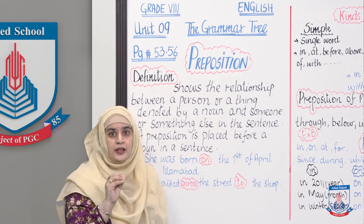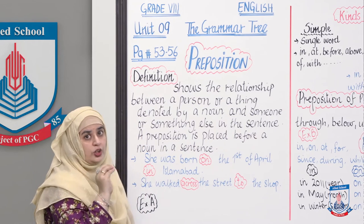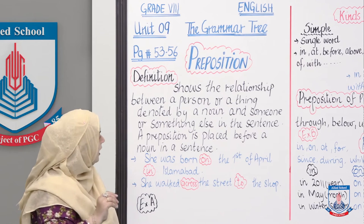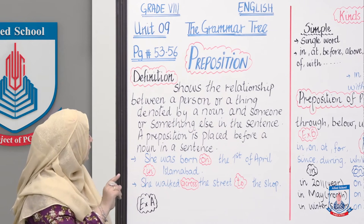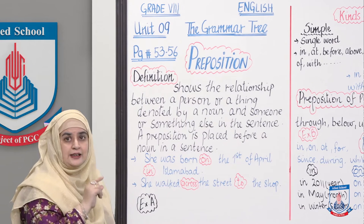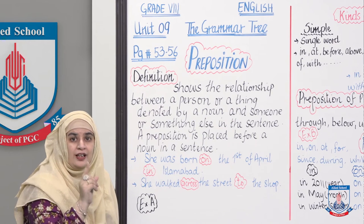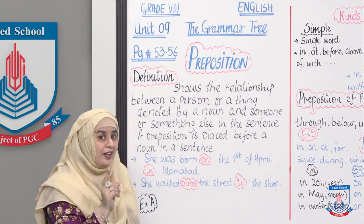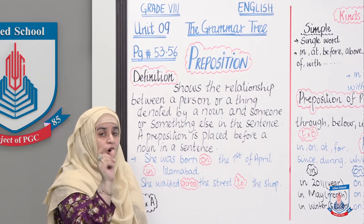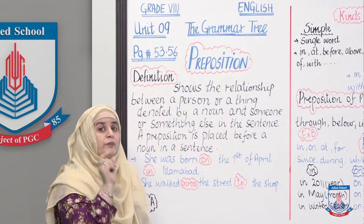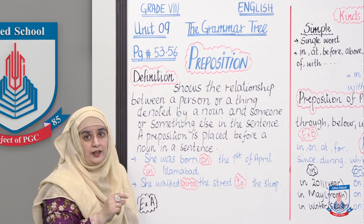Ab hum is ki example karte hain. Example kya hai? 'She was born on the first of April in Islamabad.' Kab paida hui thi? On April 1st. Kahan? In Islamabad. To yeh 'on' aur 'in' — yeh position of this subject bata rahe hain.